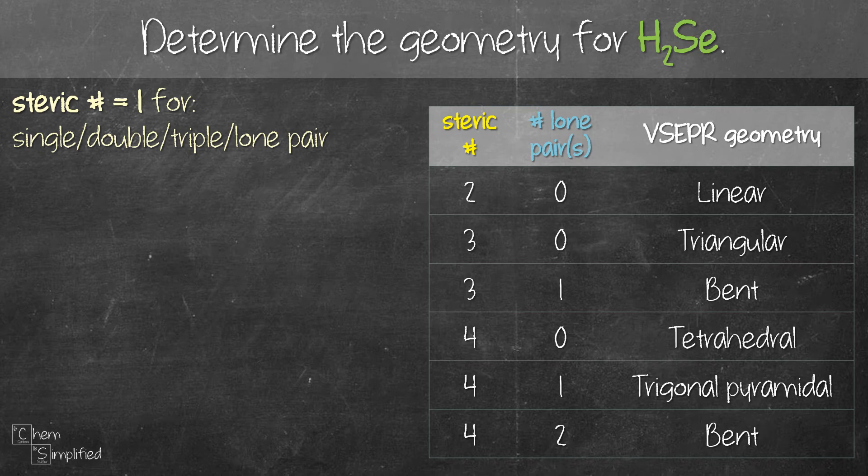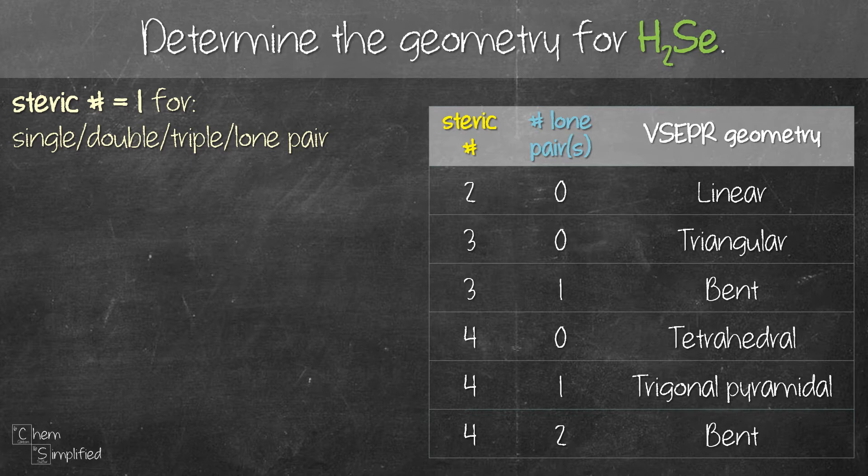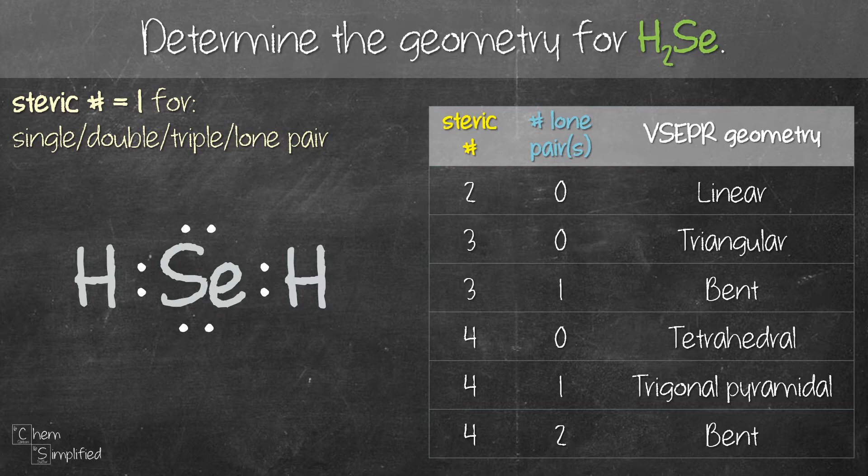We're going to figure out the geometry for H2Se. To do that, we're going to first need the Lewis structure for H2Se, and then we're going to find out the steric number and lone pair surrounding the central atom, which is Se.